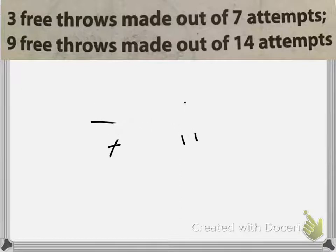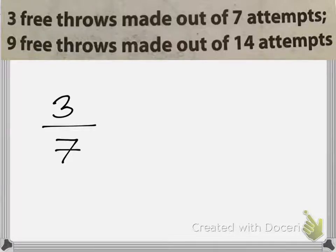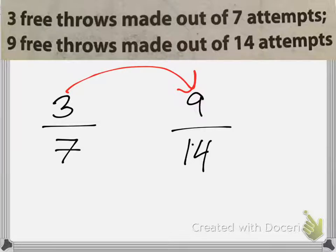Let's look at this one: three free throws made out of seven attempts and nine free throws made out of 14 attempts. Sometimes we might not be able to simplify all of these, but let's try. I have 3 over 7 and 9 over 14. How do I go from 3 to 9? Times three — I'm so glad you don't say 'add six.' You can't add when doing equivalent ratios — it's always multiply.